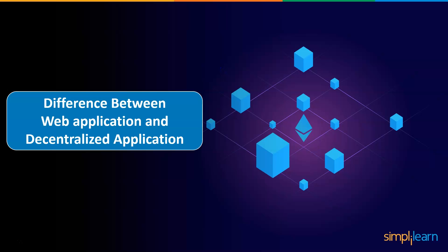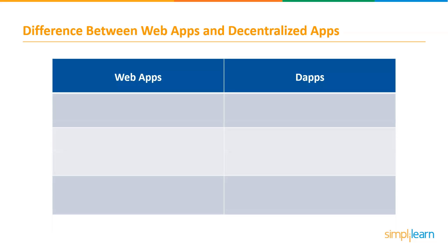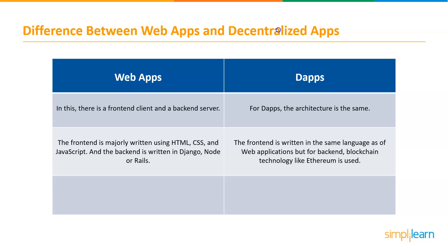But what makes DApps different from other web applications? Let's have a look at the difference between web apps and DApps. In web application architecture, there is a front-end client and a back-end server. The front-end is majorly written using HTML, CSS, and JavaScript, and the back-end is written in Django, Node, or Rails. For DApps, the architecture is the same — the front-end is written in the same language as a web application, but for the back-end, blockchain technology like Ethereum is used.